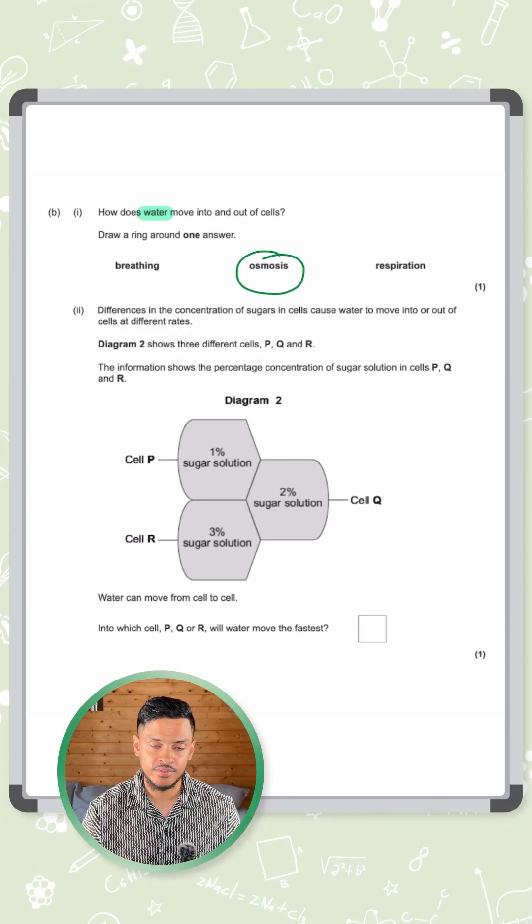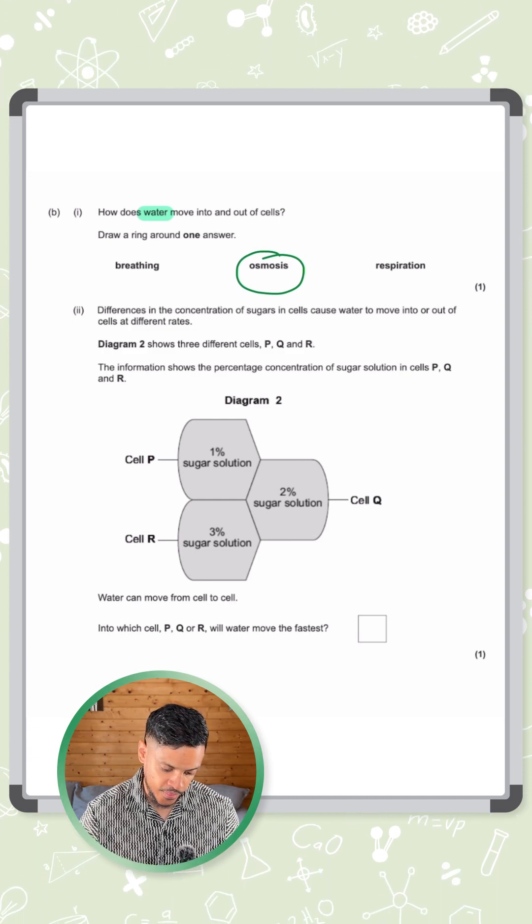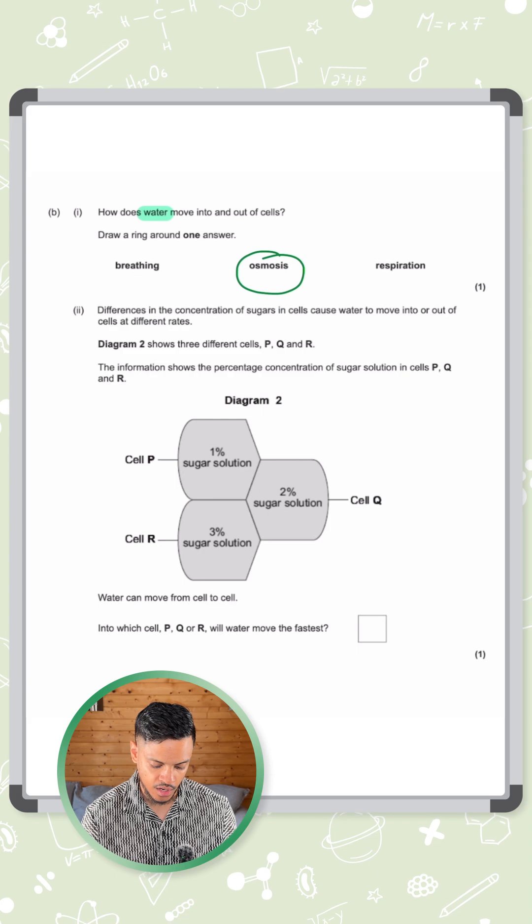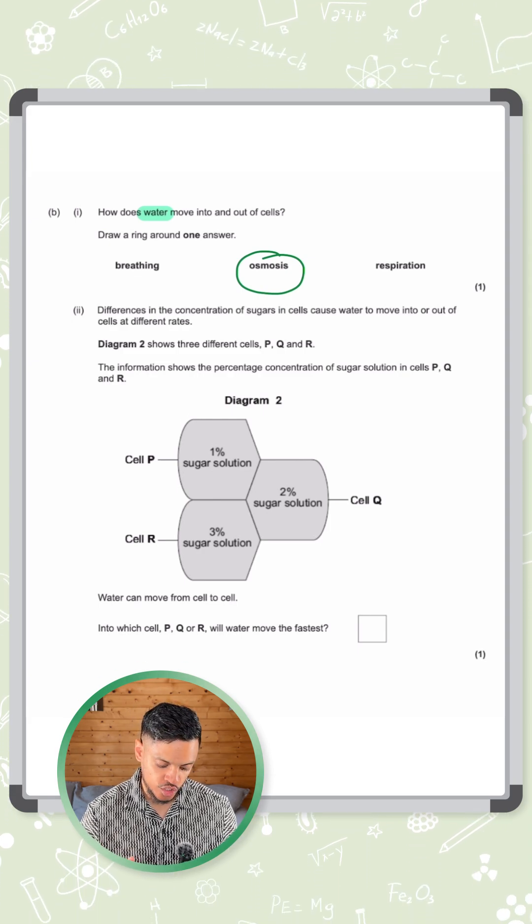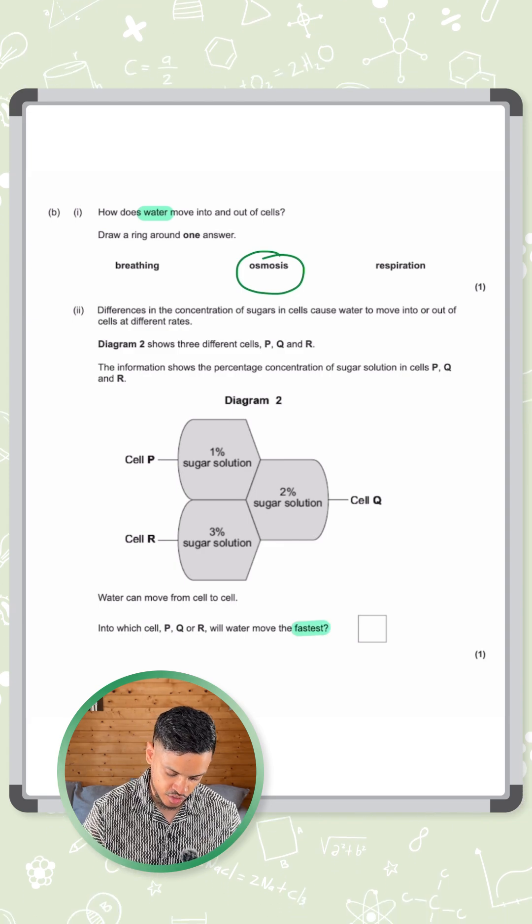It's not breathing—that's how air gets in and out of the body. And respiration, remember that's the transfer of energy from glucose. Next question, we've got three different cells here: cell P, Q, and R.